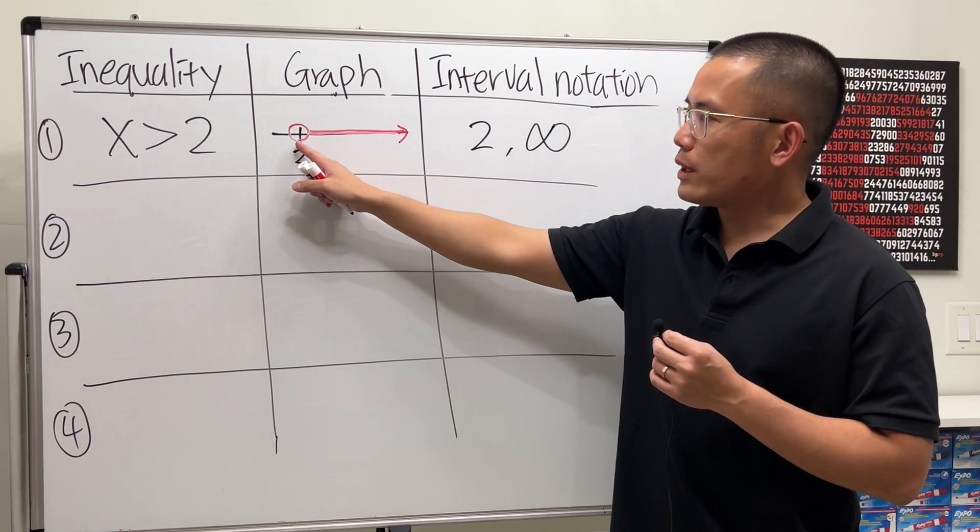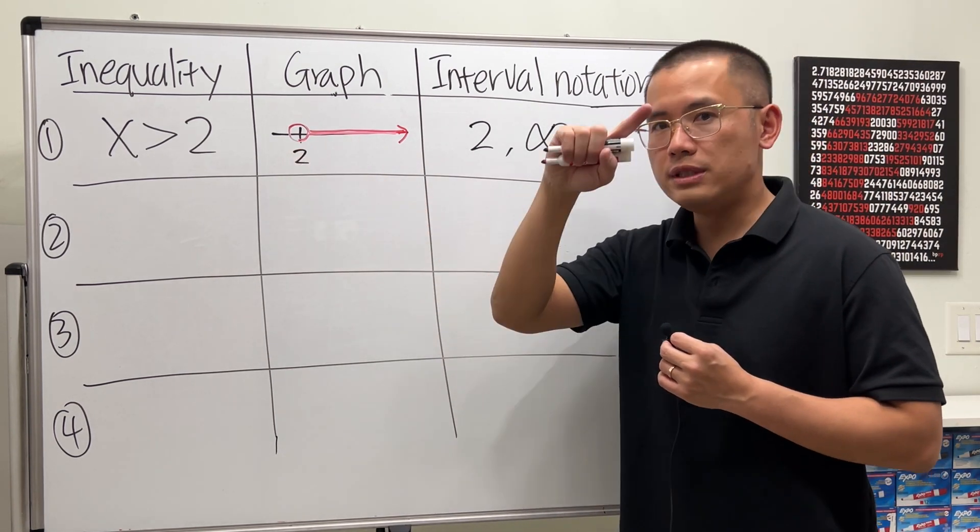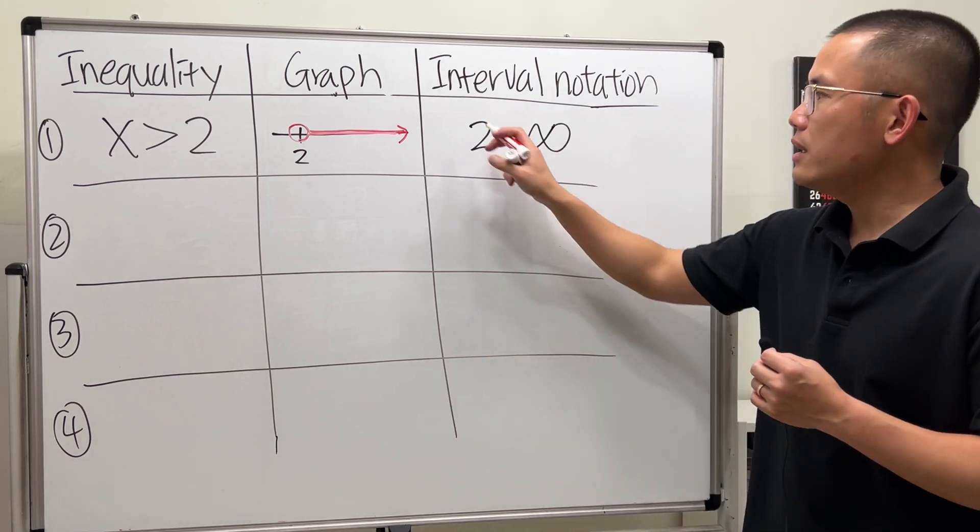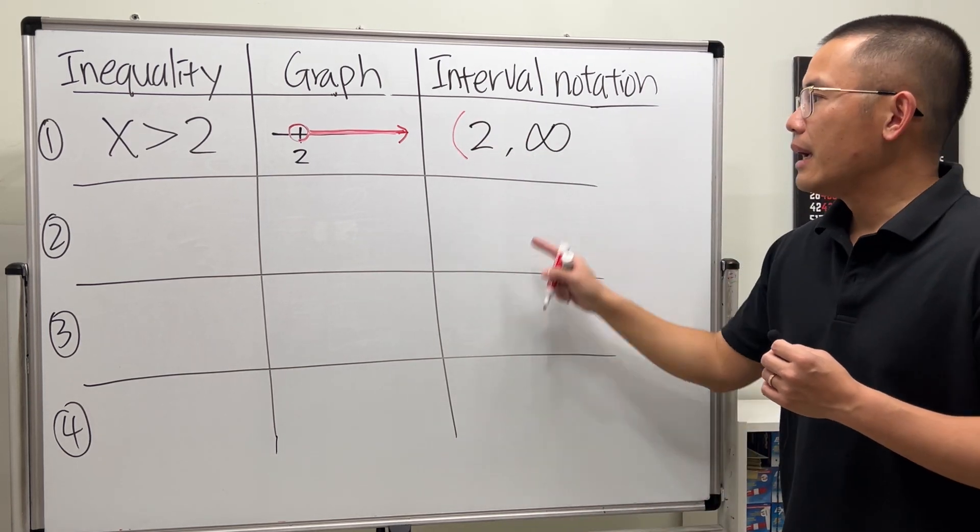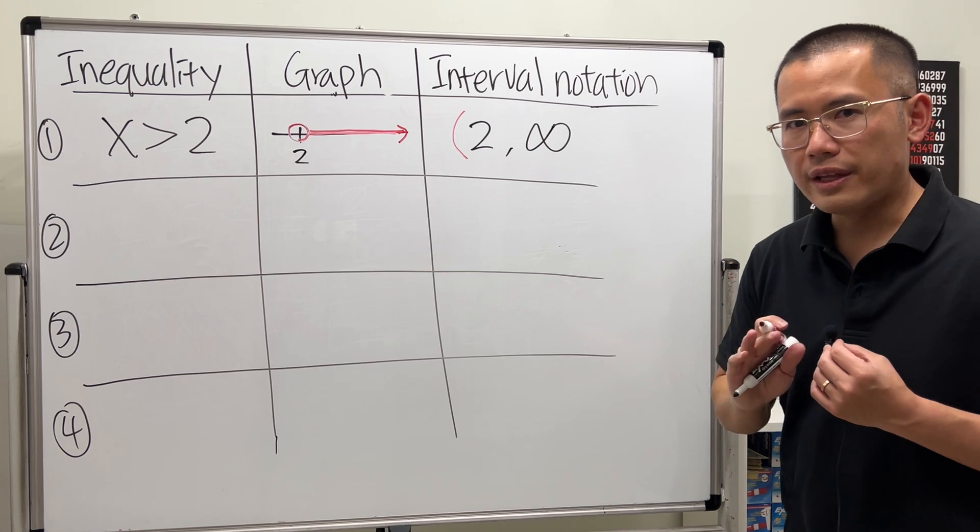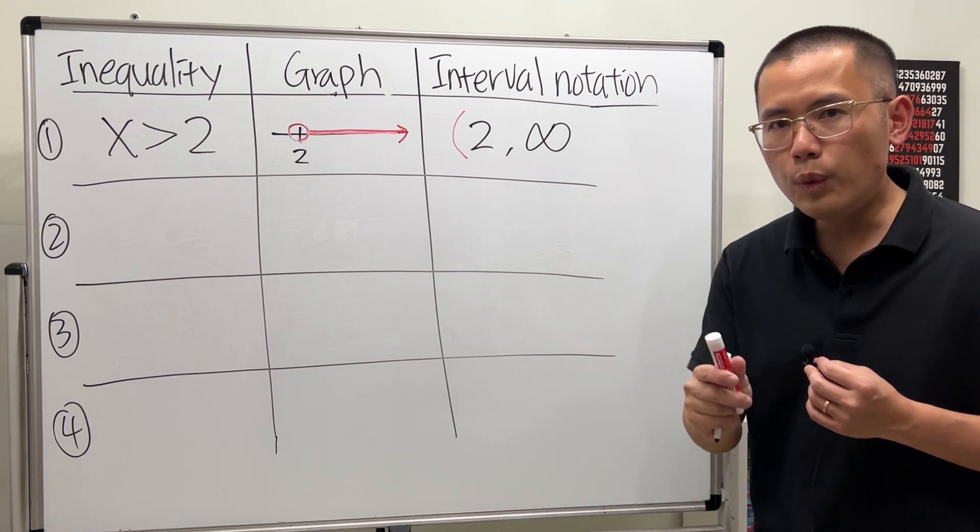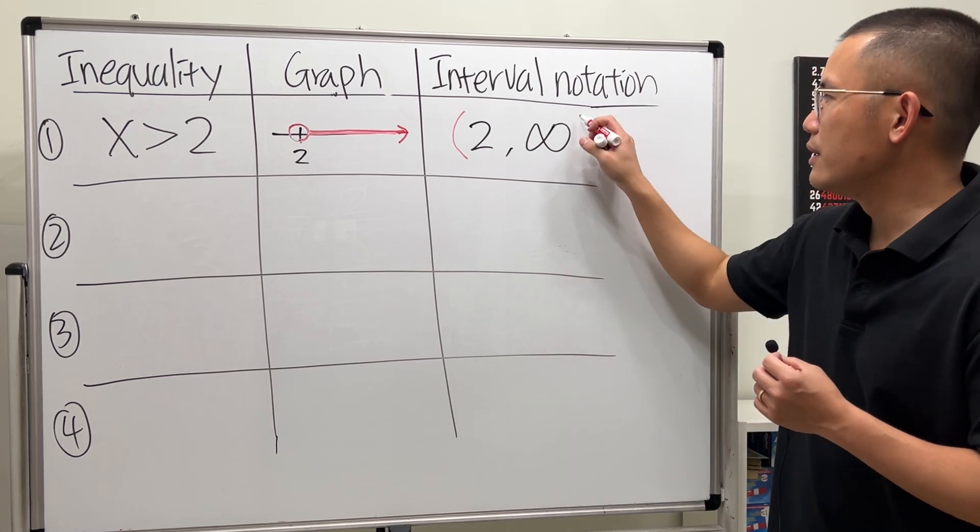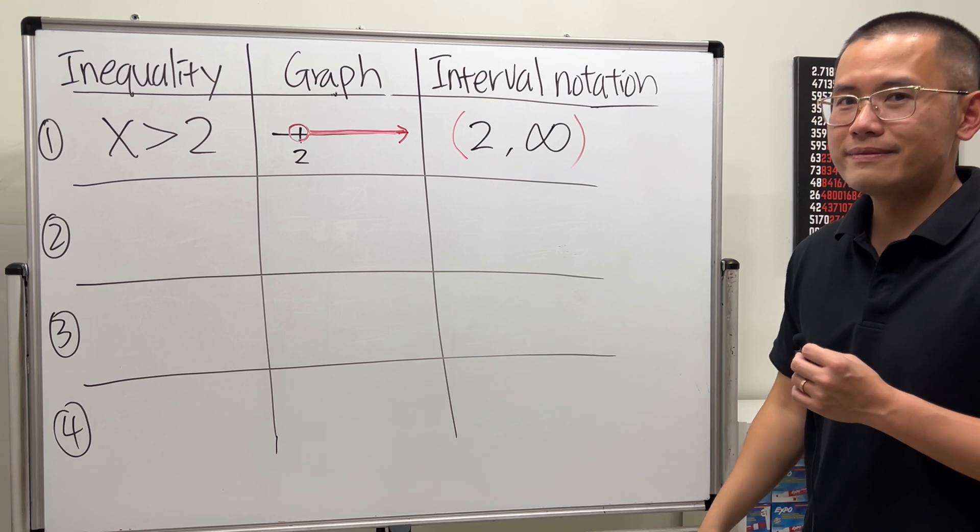Now, here's the technical part if you have to remember. Remember, if we are not including the number, we'll use the round parenthesis. So right here, I will put down a parenthesis for the 2. And for infinity, since you can never include infinity, you always use parenthesis for infinity. So it will just be like that.